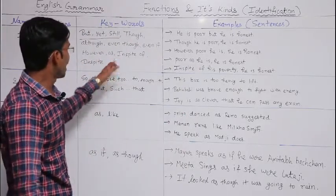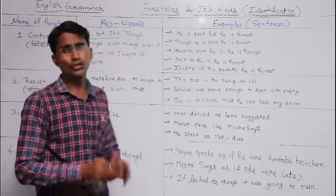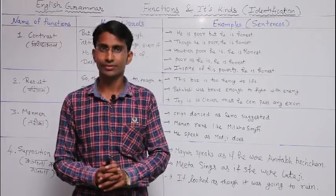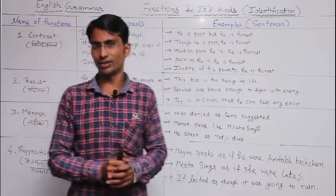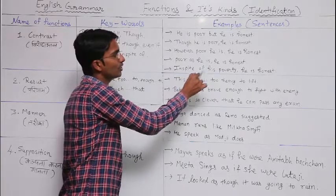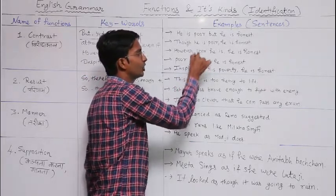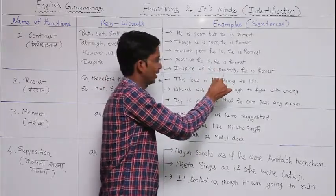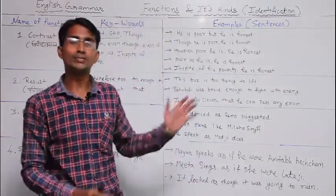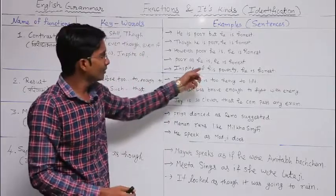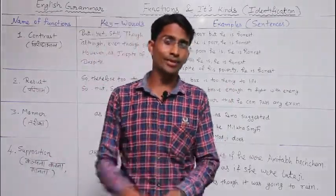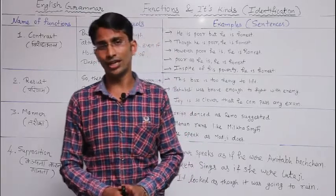The last keywords are 'in spite of' and 'despite.' After 'in spite of,' we use the noun form. For example, 'poor' is an adjective, so we convert it to its noun form: 'poverty.' So the sentence becomes: 'In spite of his poverty, he is honest.' The meaning of 'in spite of' is 'ke baavajood' — meaning 'despite his poverty, he is honest.' This completes the contrast function.